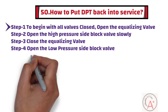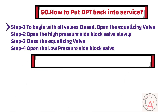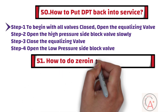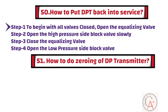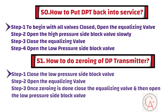Question 51: How to do zeroing of a DP transmitter? To do zeroing of the transmitter, first close the low pressure side block valve. Then in step 2, open the equalizing valve. Finally, once zeroing is done, close the equalizing valve and open the low pressure side block valve.